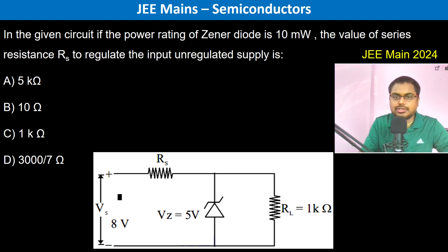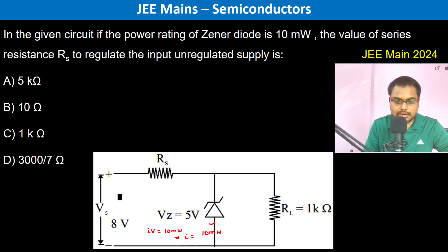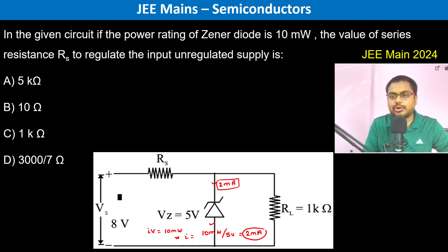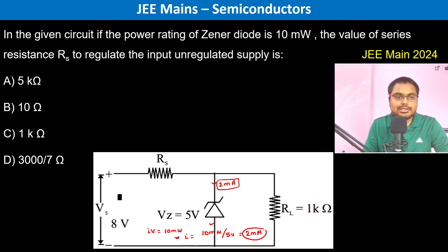In the given circuit, if the power rating of the Zener diode is 10 milliwatts, then I × V = 10 milliwatts. Therefore, I = 10 milliwatt divided by 5 volts, which equals 2 milliampere. This is how the current flows in the Zener diode, because the Zener diode always works in reverse bias.